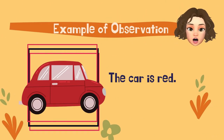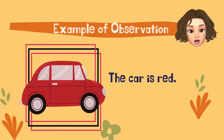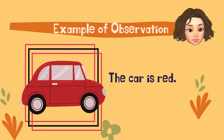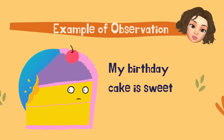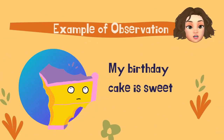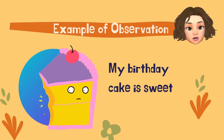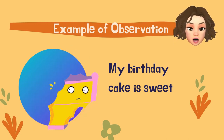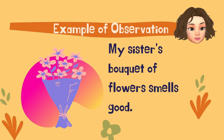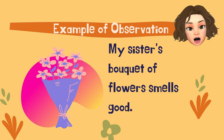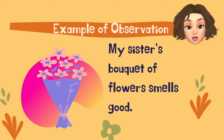Here is an example of observation. When we use our sense of sight, we can identify the color of the car, which is red. And using our sense of taste, we can say that the birthday cake is sweet. And another example, using sense of smell, we can smell that a bouquet of flowers smells good.